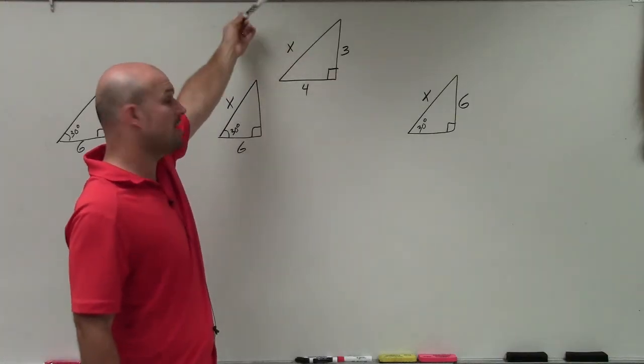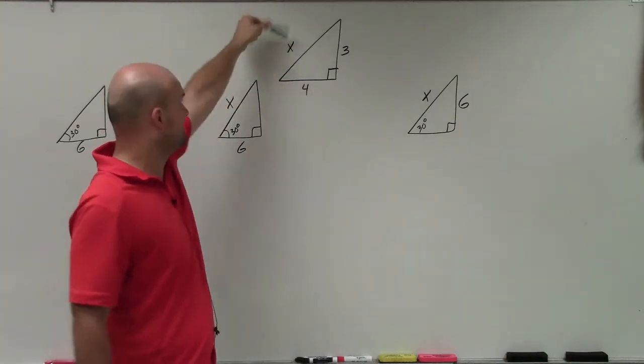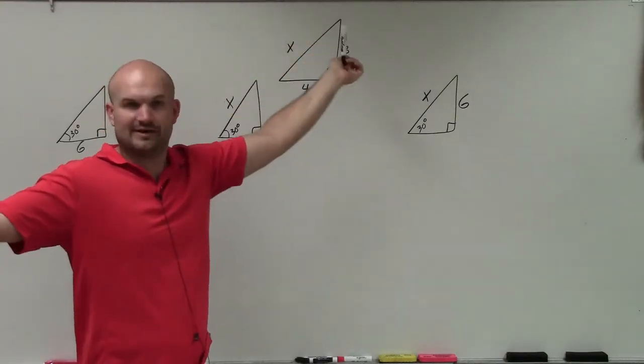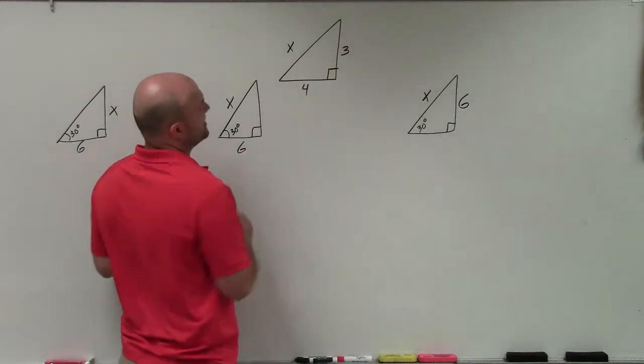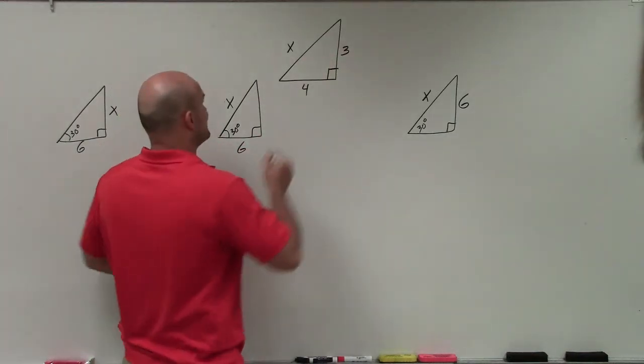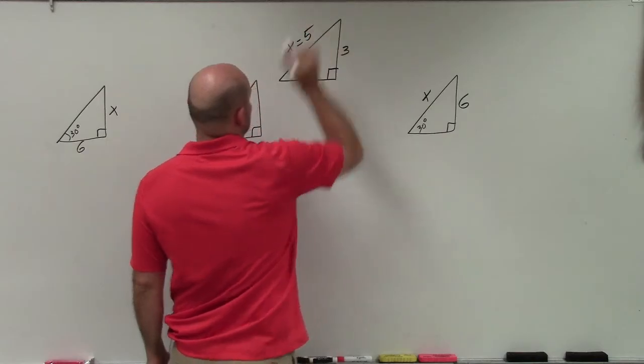If we had something like this, we noticed that if I have two sides and I need to find the third side, I can use the Pythagorean theorem. We could use the Pythagorean theorem, or you could notice that this is a Pythagorean triple, so therefore x is equal to 5.